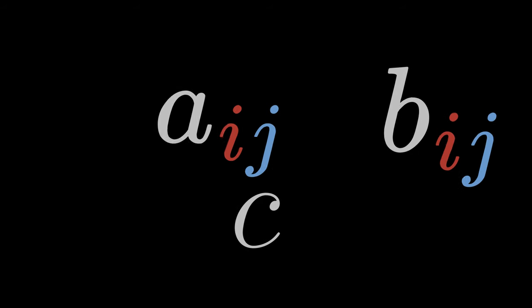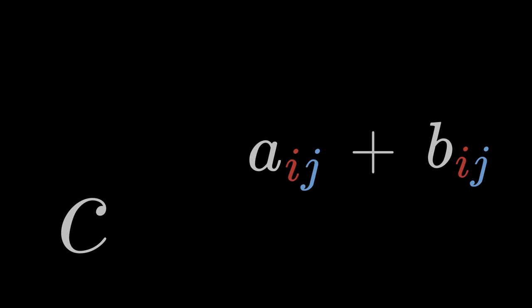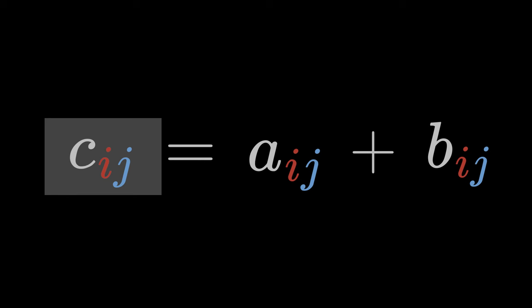We can add two tensors A and B of the same order. Aij plus Bij equals Cij. The result is a new tensor of the same order.